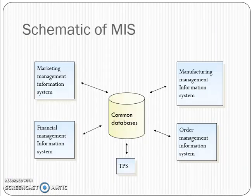The schematics of MIS show that it integrates different functions of the organization: Marketing MIS, Financial MIS, Manufacturing MIS, and Order Management MIS are all integrated. From all four of these types, the Transaction Processing System is required in a bidirectional information exchange.